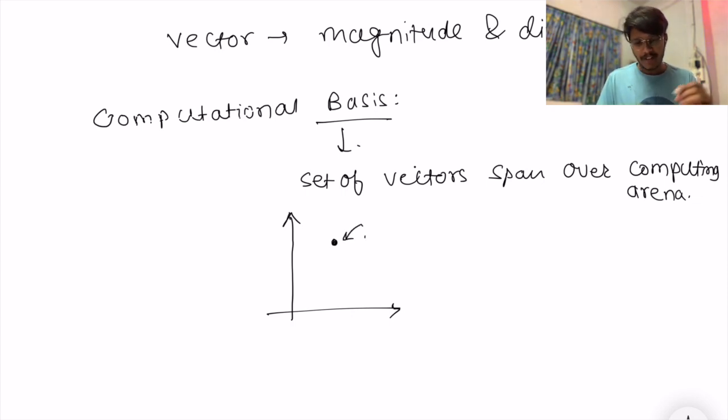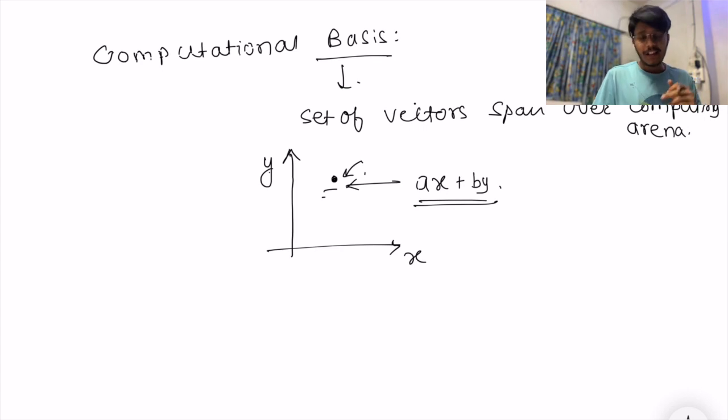For example, in case of classical computers we represent this as x-axis and y-axis, and this particular point will be a combination of x and y. Same way in quantum computers.